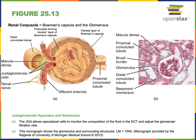Where the distal convoluted tubule and the afferent arteriole touch each other, a special structure known as the juxtaglomerular apparatus is located to help regulate the function of the kidneys. The juxtaglomerular apparatus consists of two regions: a part of the distal convoluted tubule called the macula densa, and a part of the afferent arteriole called the juxtaglomerular cells.